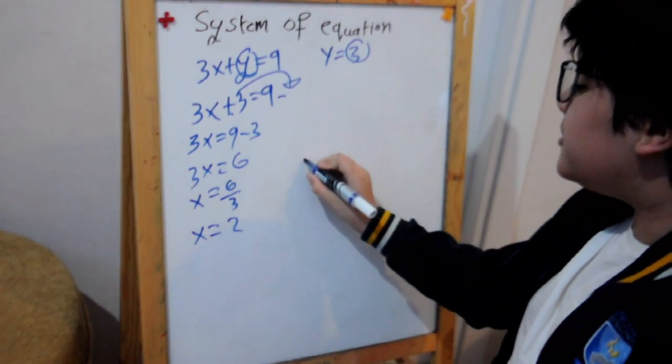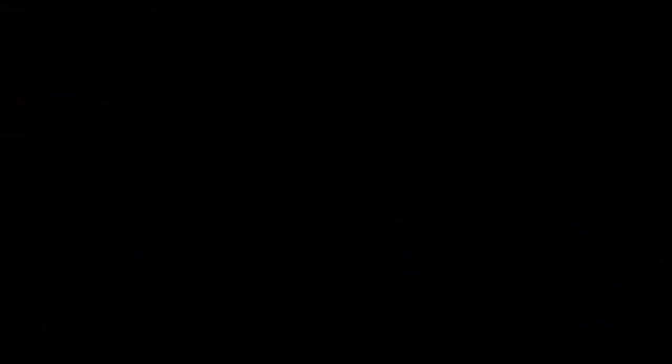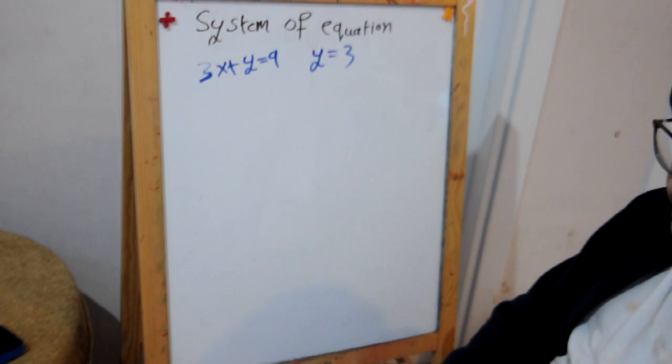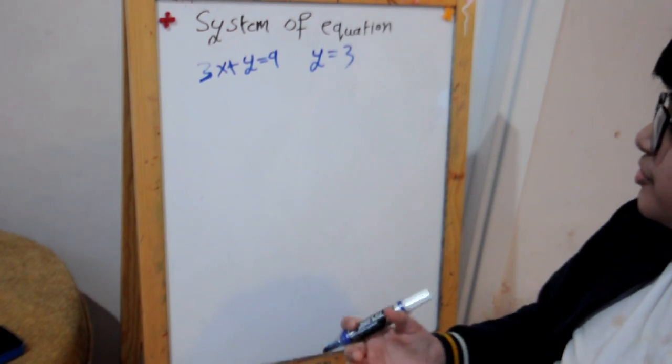Then x equals 6 over 3, which equals 2. Then the solution would be 2 and 3. Now, here's another solution to it.